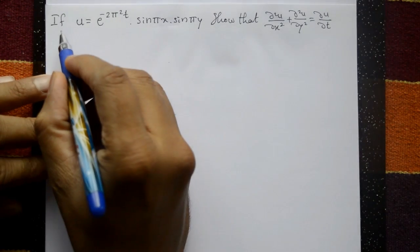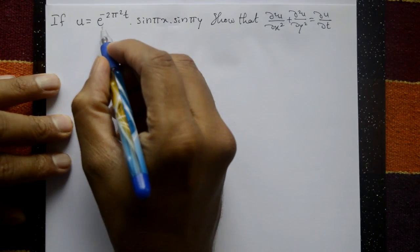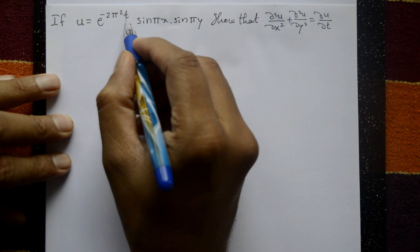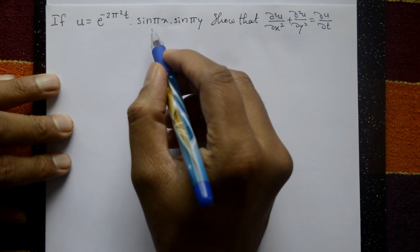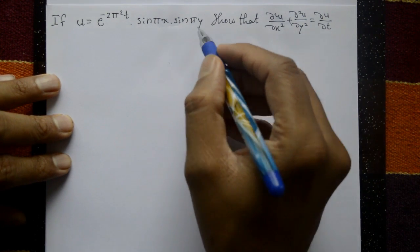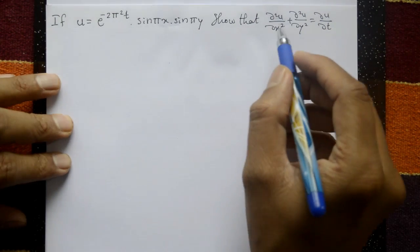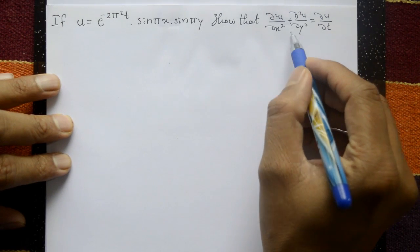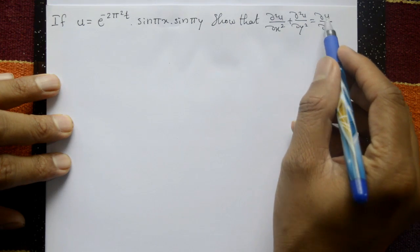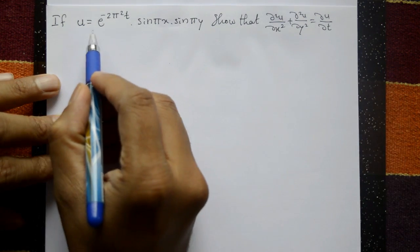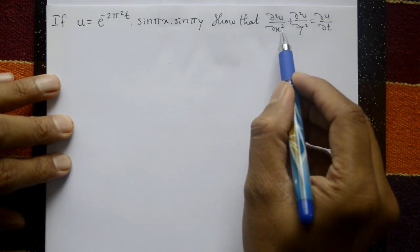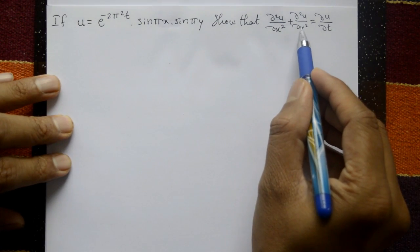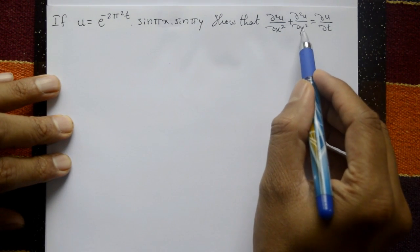Second problem: If u = e^(-2π²t) · sin(πx) · sin(πy), show that ∂²u/∂x² + ∂²u/∂y² = ∂u/∂t. Differentiate u with respect to x 2 times and with respect to y 2 times, add them for the left-hand side, and differentiate u with respect to t once for the right-hand side.